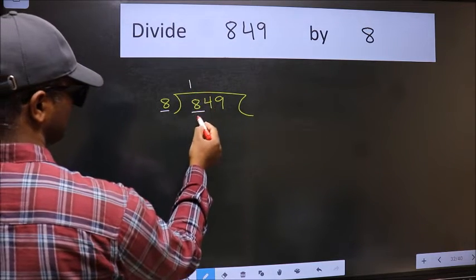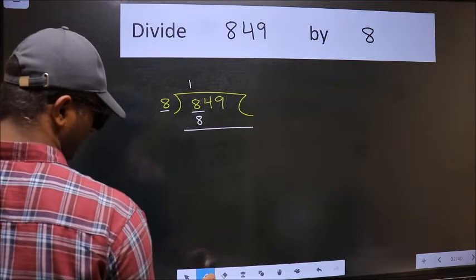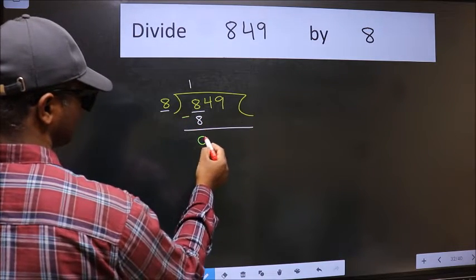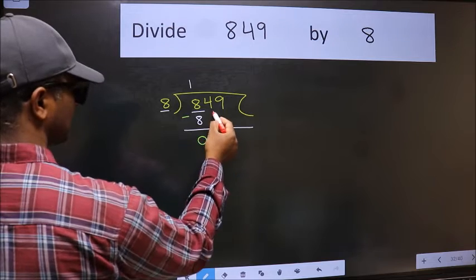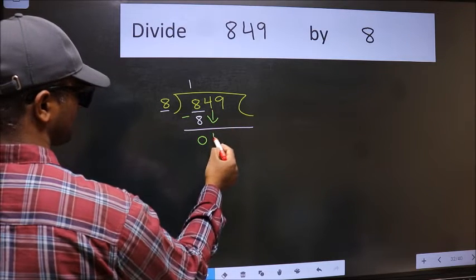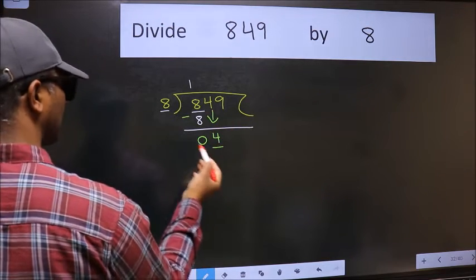8 times 1 is 8. Now we should subtract, we get 0. After this, bring down the beside number 4 down. Now here we have 4 and here 8.